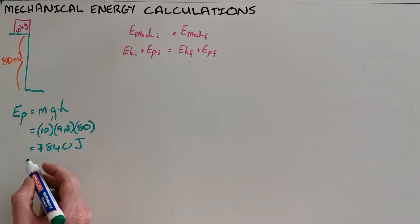This object has a potential energy of 7,840 joules at this point 80 meters above the ground. That also in this case, because the kinetic energy at the start is zero, we can say that the mechanical energy at that point is also 7,840 joules.